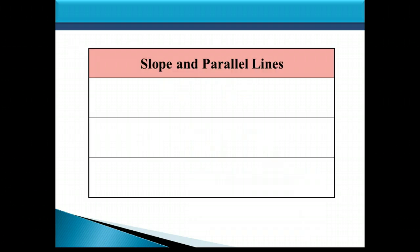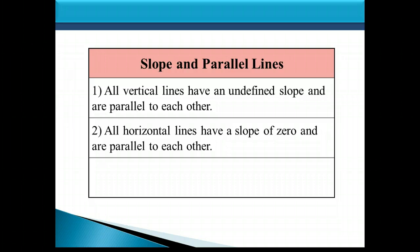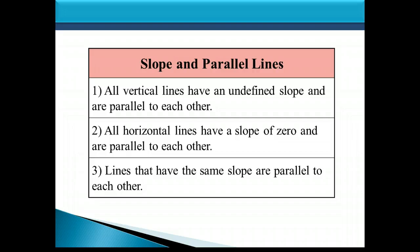Now let's talk about slope and parallel lines. All vertical lines have undefined slope, and they're all parallel to each other. Similarly, all horizontal lines have the same slope of zero and are all parallel to each other. If we have slanted lines that are neither vertical nor horizontal but have the same slope, then they are parallel to each other — two lines with the same slope will never cross.